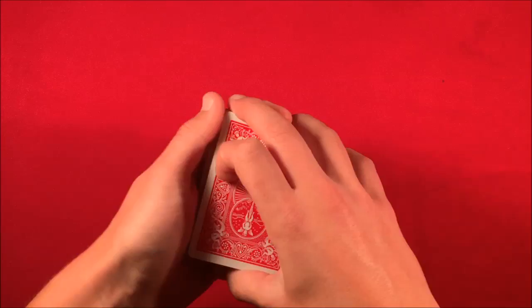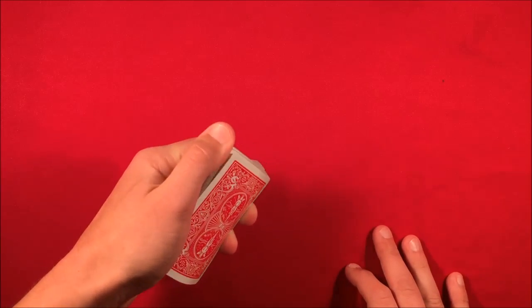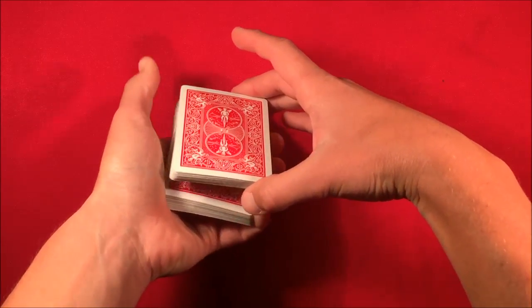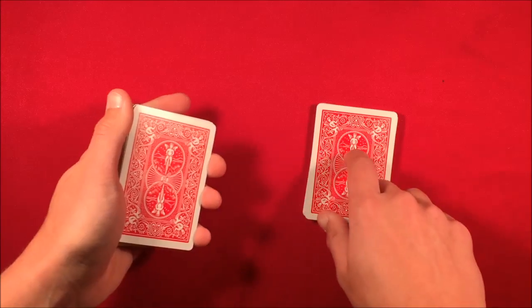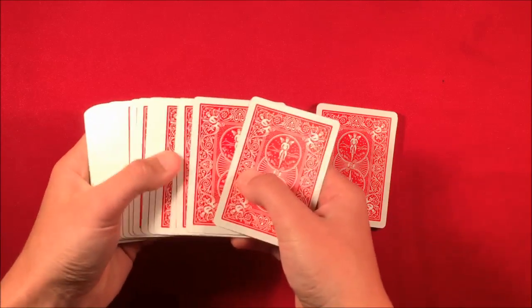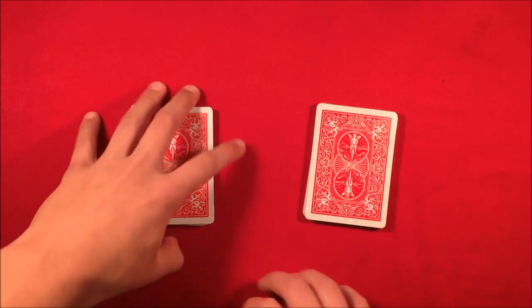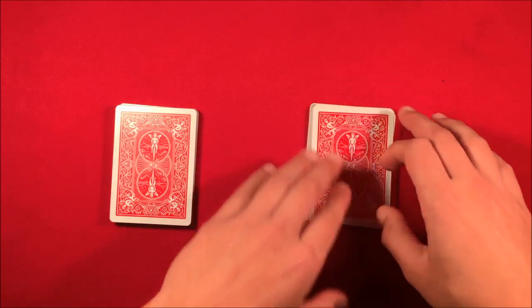You have the pinky break. The spectator, you're going to have them call out stop. You take the cards from the pinky break. So now you should have the 25 packet card over here and the 27 packet on the left.